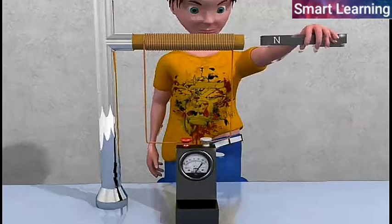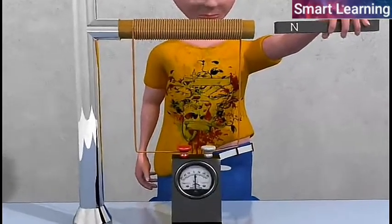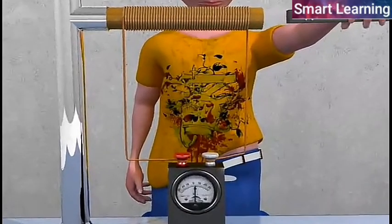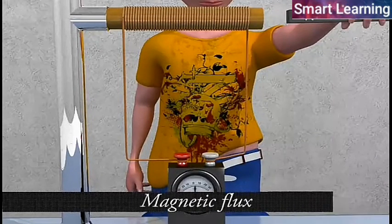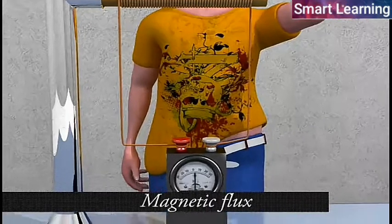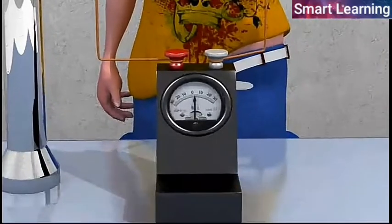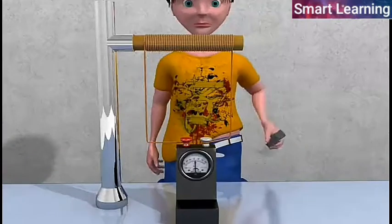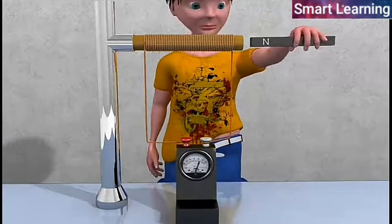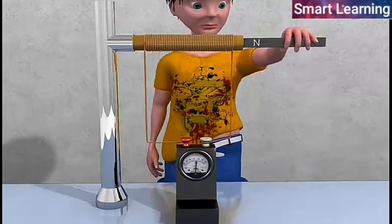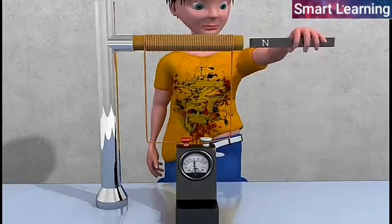When the magnet and the coil are at rest with respect to each other, the total number of magnetic field lines, called magnetic flux, remains constant. So galvanometer shows no deflection. Whenever there is relative motion between the coil and the magnet, the magnetic flux linked with the coil changes and galvanometer shows deflection.